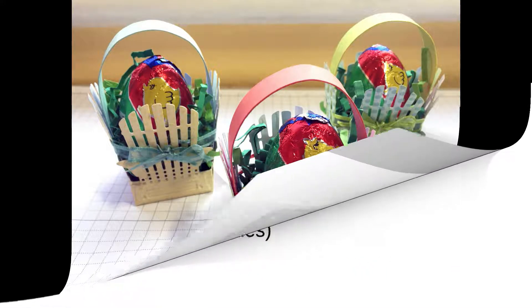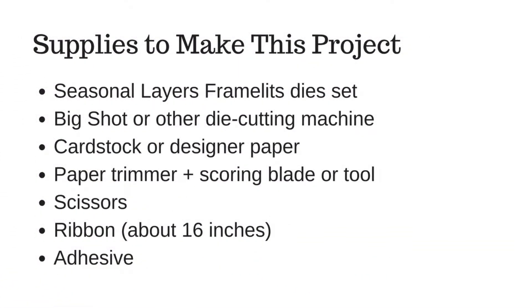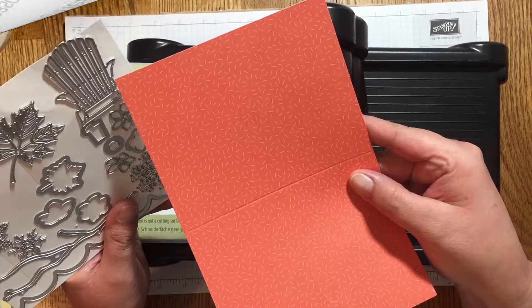Here are the supplies you'll need to make this project: your seasonal layers framelits die set and your big shot or another die cutting machine, some cardstock or designer paper, your paper trimmer with a scoring blade or another scoring tool, scissors, about 16 inches of ribbon, and some adhesive.